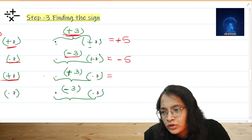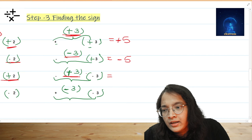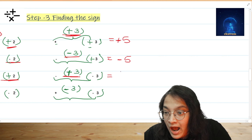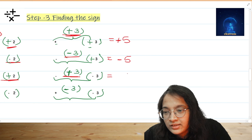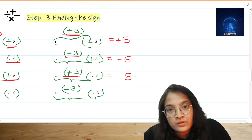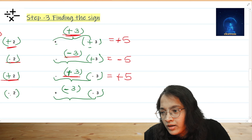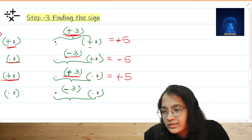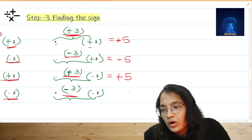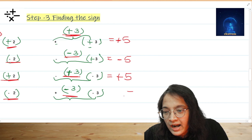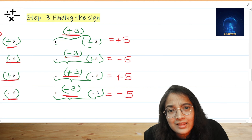Next we have plus 2 and plus 3 — both signs are the same, so add the numbers and carry the sign as it is, giving plus 5. Finally, minus 2 and minus 3 — again same signs, so we add the numbers and place the sign as minus, giving minus 5. That's the complete equation.